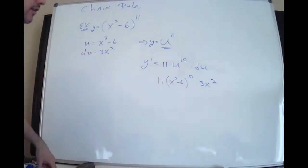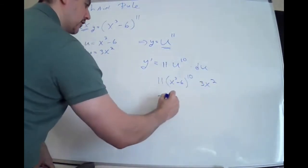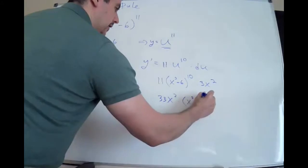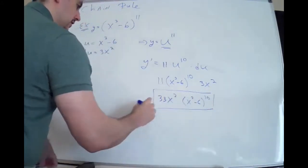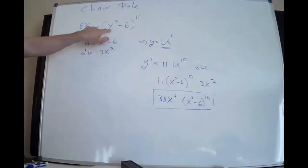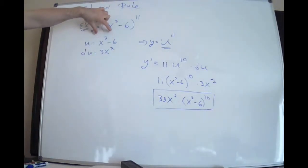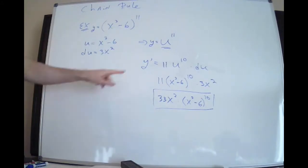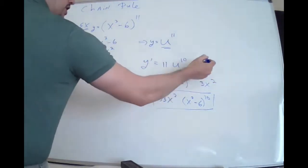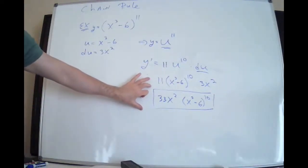I only have an 11 and a 3, so I multiply them together and put 33 in the front. I do expect you to simplify this part. So the process is: identify the inside function as u, take its derivative right away, replace the inside with u, take the derivative as you normally would, don't forget the chain rule part, then plug everybody back in and simplify if you can.